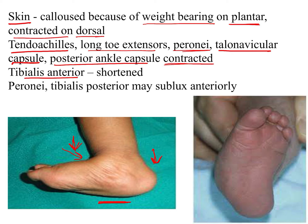Tibialis anterior, which is found on the dorsal surface, is shortened. While the structures found on the plantar surface — peronei and tibialis posterior — may sublux anteriorly, adding to the anterior deformity.